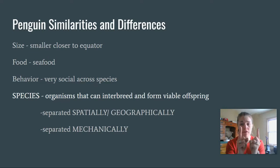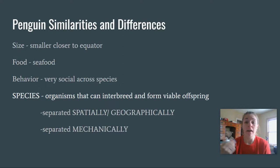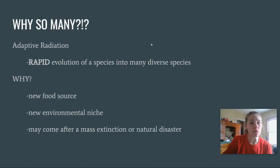Sometimes animals, when they get separated spatially or geographically, become so different that even if they were to meet up with the original group again they could not form viable offspring anymore. They can also be separated mechanically — for example, a giant Clydesdale horse and a little pony are different species because even though they're both horses, they're not going to be able to breed with each other because the parts just don't fit.